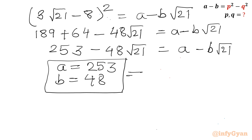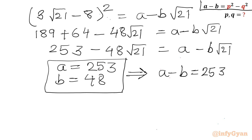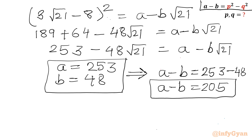So the value of A minus B which is required: A minus B equals 253 minus 48, which gives 205. Now we have to write 205 in terms of P squared minus Q squared.